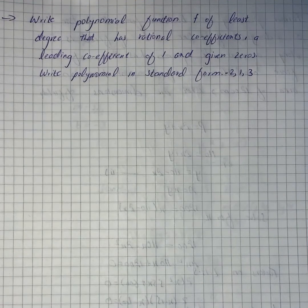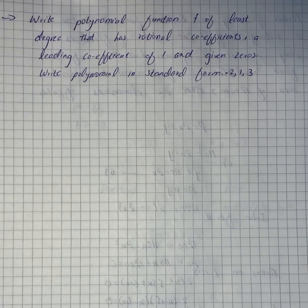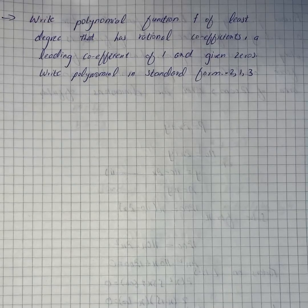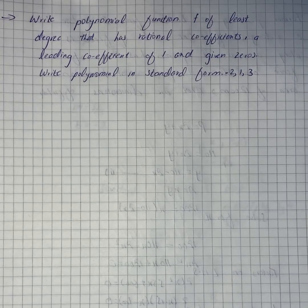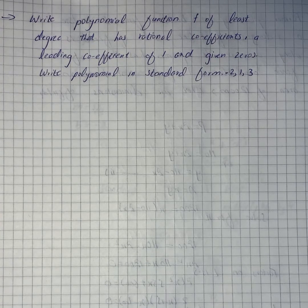The question says write a polynomial function f of least degree that has rational coefficients, a leading coefficient of 1, and the given zeros. Write the polynomial in standard form. If a is a zero of a polynomial, then x minus a is one of its factors.